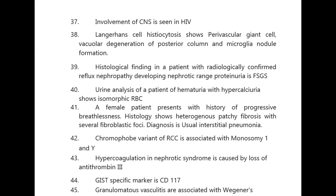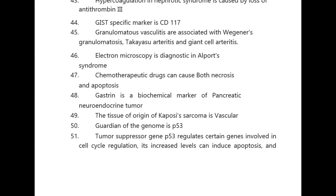Hypercoagulation in nephrotic syndrome is caused by loss of antithrombin 3. GIST-specific marker is CD117. Granulomatous vasculitides are associated with Wegener's granulomatosis, Takayasu's arteritis, and giant cell arteritis.